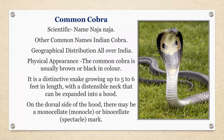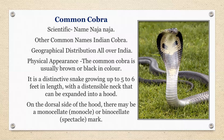Common cobra — also named Naja naja. Other common names include Indian cobra. Geographical distribution: all over India. Physical appearance: the common cobra is usually brown, orange, or black in color and 5 to 6 feet in length. On the dorsal side of the hood, there may be a monocellate or binocellate spectacle mark, which may or may not be present — if present, it is the differentiating point.